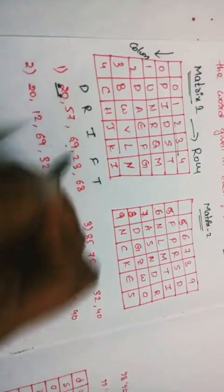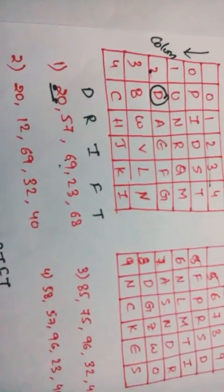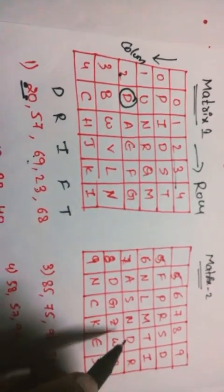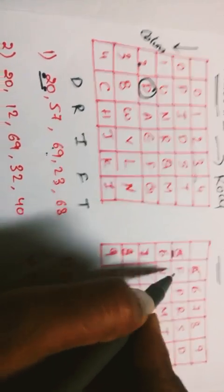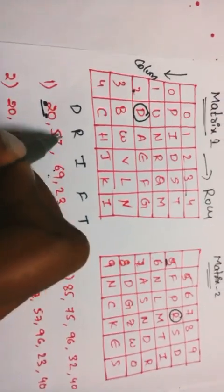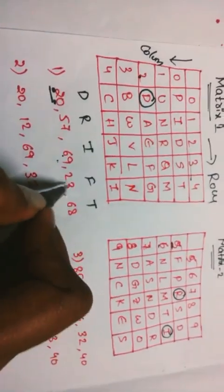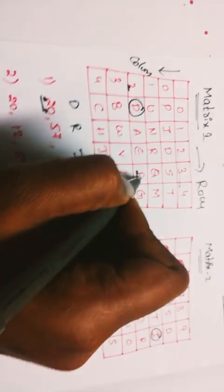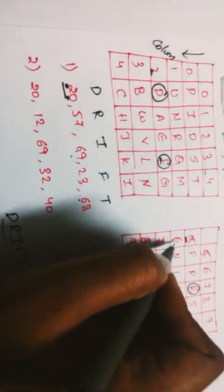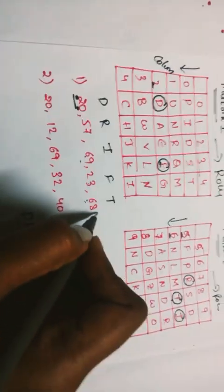Let's check option one. The first number represents the column and the second number represents the row. So for 2,0: column 2, row 0 — D is satisfied. Next, 5,7: column 5 in the second matrix — R is satisfied. Then 6,9: I is satisfied. Then 2,3: F is satisfied. Then 6,8 — checking the sixth column, sixth row — S or T? At 6,8 the letter S is found, so T is satisfied.